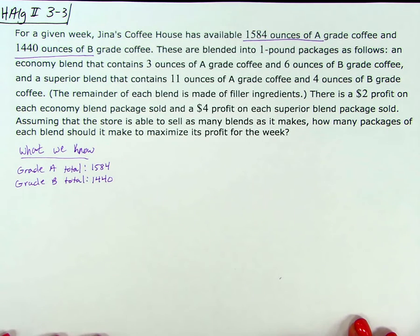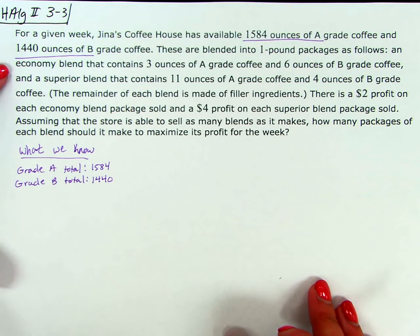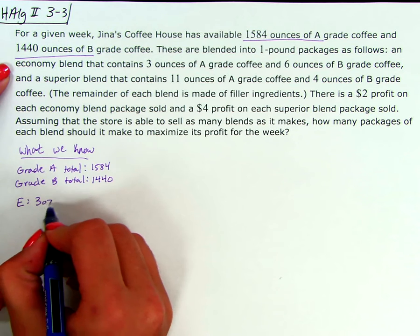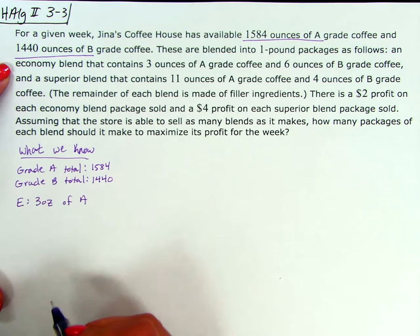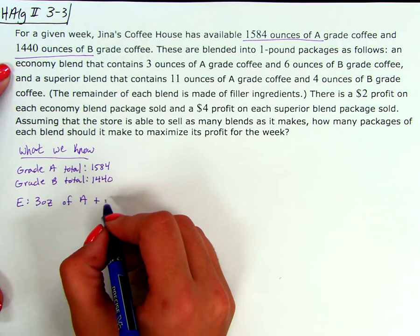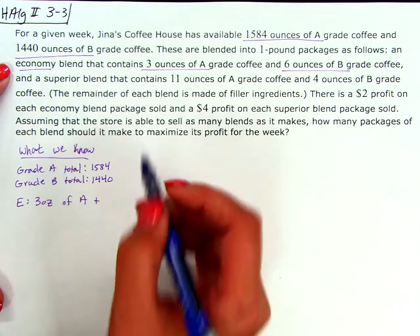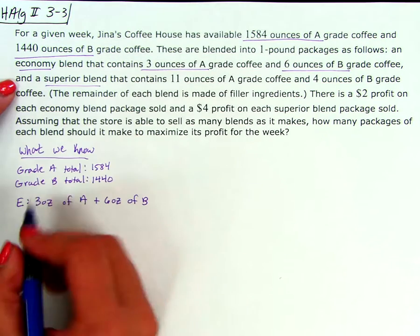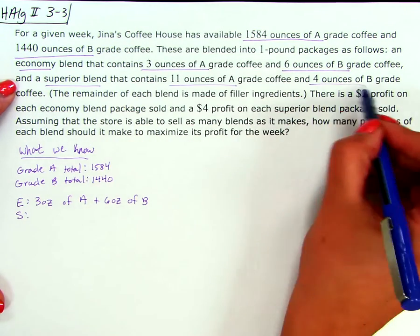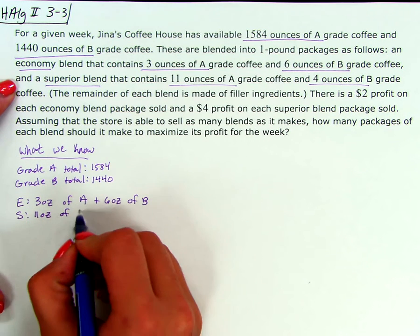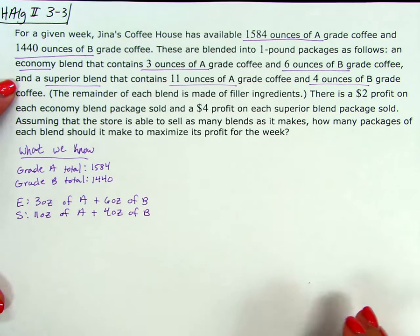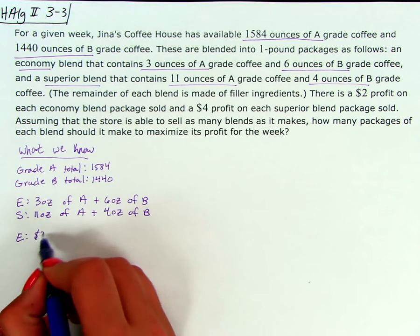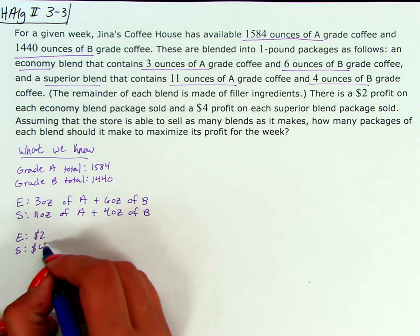These are blended into one-pound packages as follows. So for the economy blend — I'm going to use E for economy — we have 3 ounces of grade A and 6 ounces of grade B. And then the superior blend — S for superior — we have 11 ounces of A and 4 ounces of B. We make $2 profit on economy and $4 profit on superior for each bag that we sell.